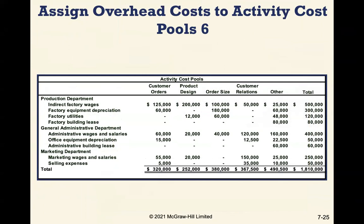Taking the chart with percentages allocated to each activity cost pool and working through costs from the production department, general administrative department, and marketing department gives us the full breakdown. For example, factory building lease goes entirely to 'other,' and the administrative building lease also goes entirely to 'other,' while most other costs are split across two or more activity cost pools based on the determined percentages.